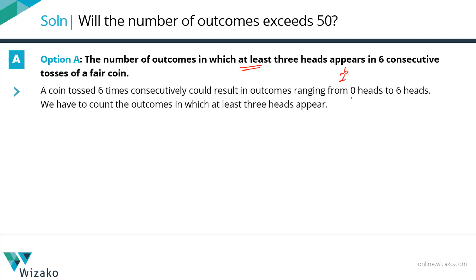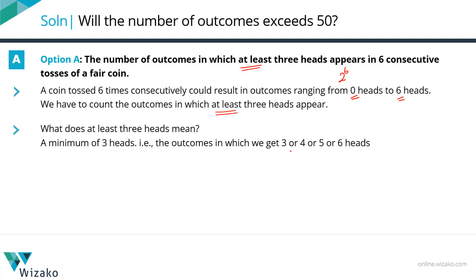If you toss a coin 6 times, you could get anywhere from 0 heads to all 6 being heads. We need to count outcomes where we get at least 3 heads — meaning a minimum of 3. So 3, 4, 5, or 6 heads are all acceptable. We'll count the outcomes for each and add them, because we're combining with OR. Concatenate with OR, you add. Concatenate with AND, you multiply. Keep this as a mnemonic for any permutation question.